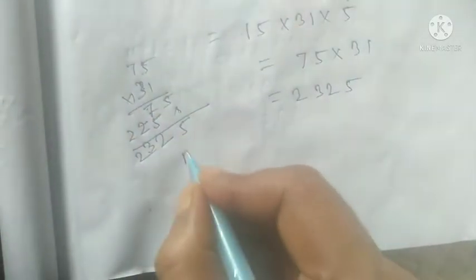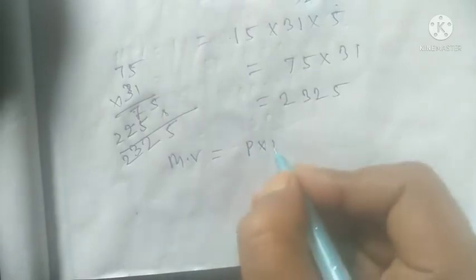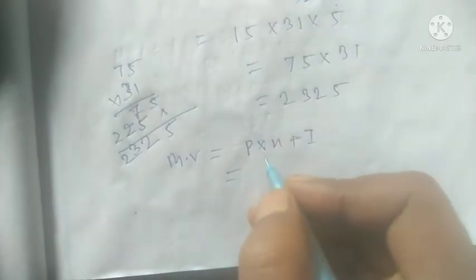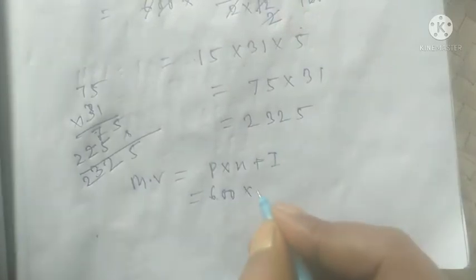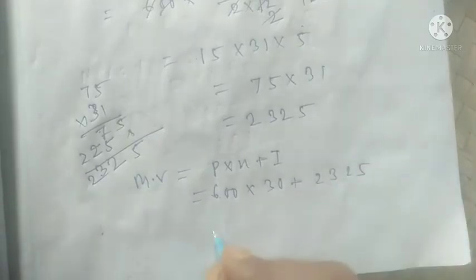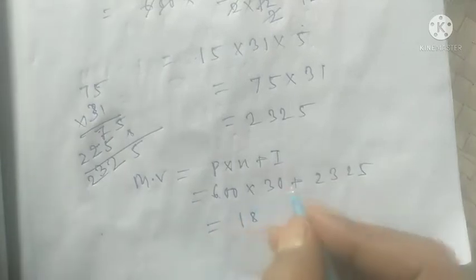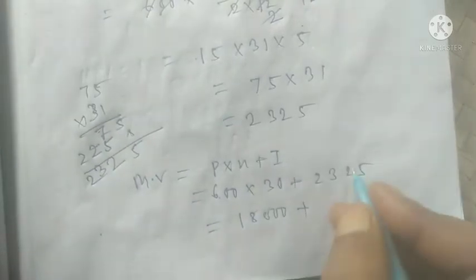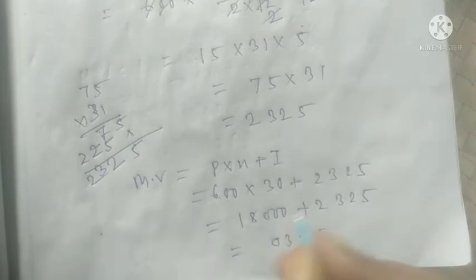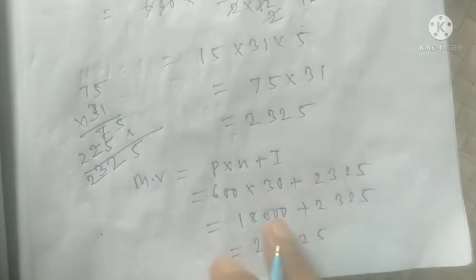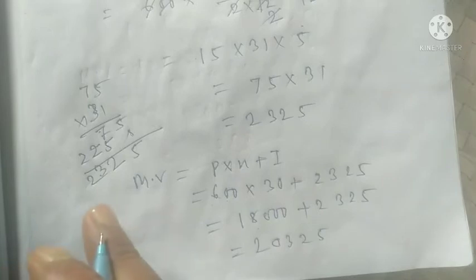The total interest 2325 rupees is not the final answer. You have to calculate the maturity value. MV equals P into N plus I. P is 600, N is 30, and I is 2325 rupees. Multiply 600 into 30 to get 18000, then add 2325. The maturity value is 20325 rupees. That is your answer for question number four. Question number five is similar to question four, so if you understand step by step you can solve it easily.